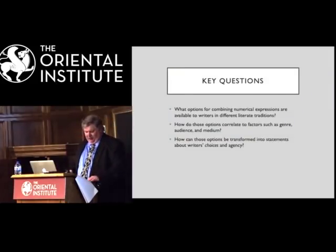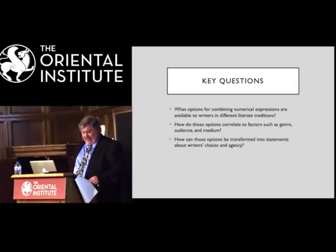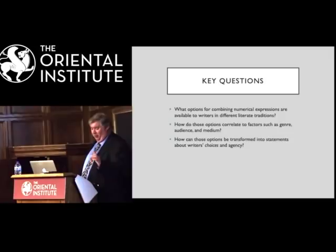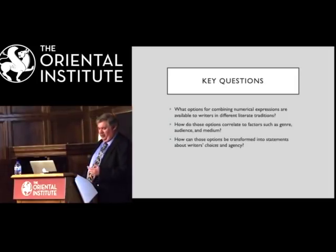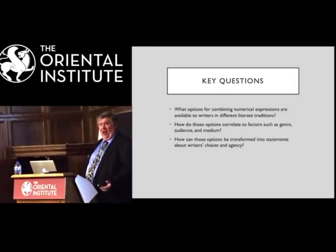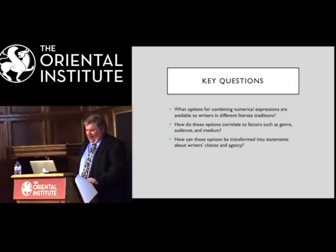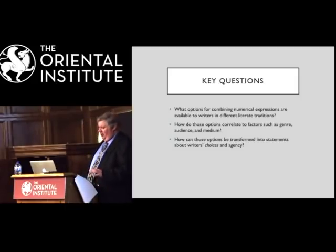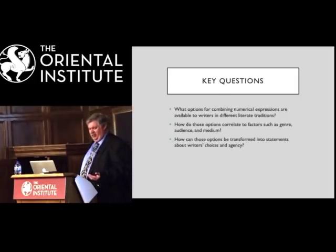Explaining how and why this variability persists and why these changes occur is no easy task, even for a contemporary world language like English. It's substantially more challenging to examine variation in numerical expressions in pre-modern texts and literate traditions. This brings us to a set of key analytical questions: First, what options exist in each society or literate tradition for writing numbers? Second, how does this variation correlate with genre, audience, and medium — the kinds of questions that specialists in philology, epigraphy, and paleography often ask? Third, how can we use this variation to comment usefully on scribal choice? My goal is to contribute to a historical sociolinguistics of numeration, with a particular focus on the ancient Near East and Mediterranean.